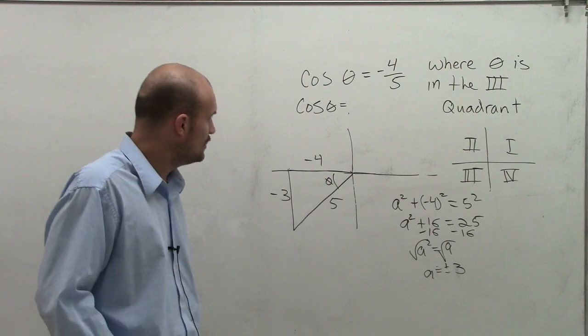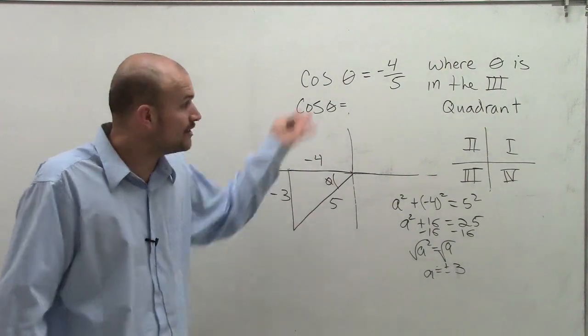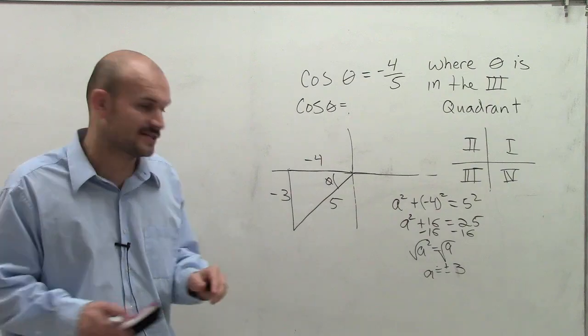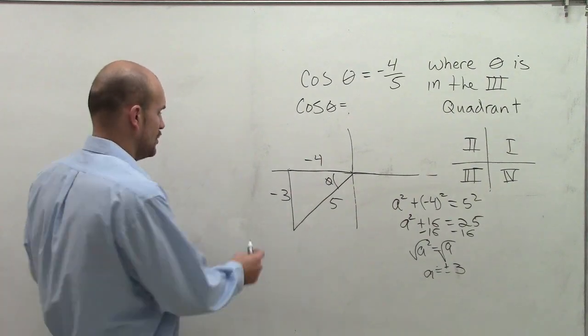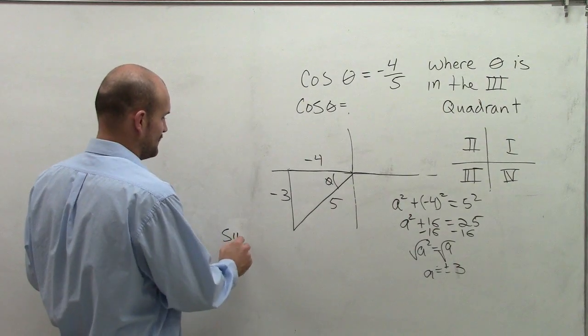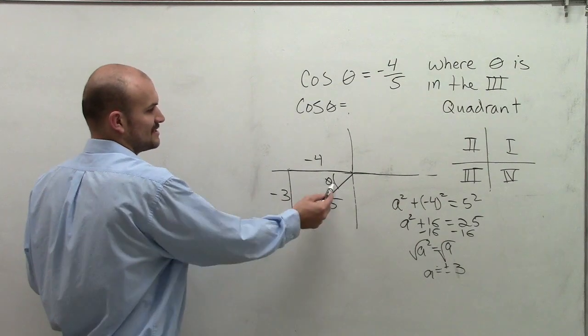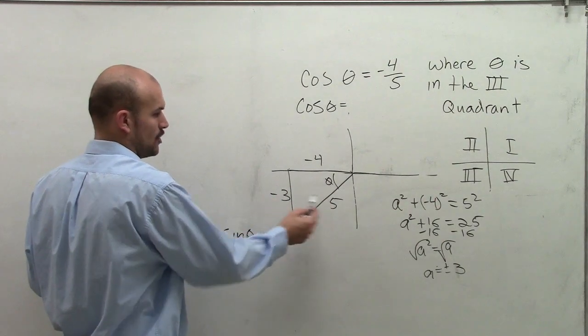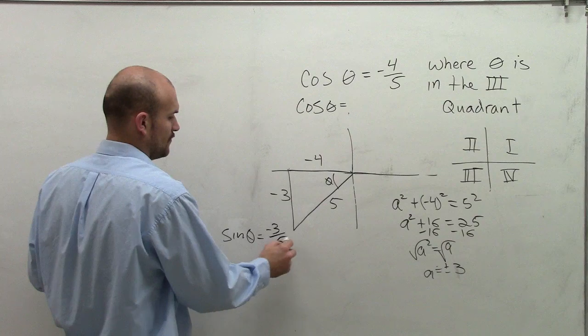So now once we have our full triangle in the correct quadrant, we need to evaluate our six trigonometric functions. So remember the sine of theta represents the opposite side over the hypotenuse, negative 3 over 5.